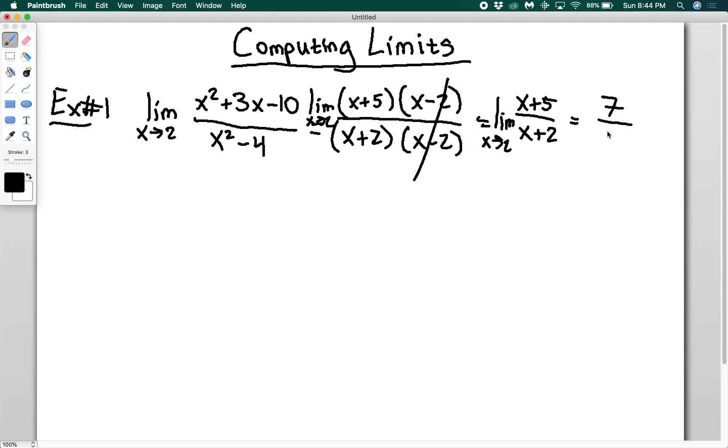Now what I can do is plug in 2 and I get 7 fourths. This is the location of my hole, but more importantly this is the value that the function is approaching as x gets closer and closer to 2. We factored it out, we divided, and that allowed us to solve the problem.